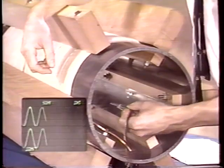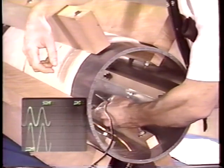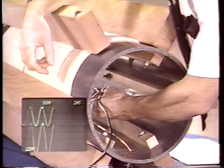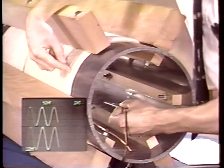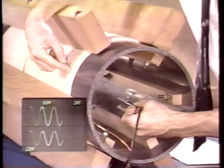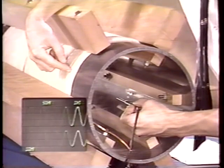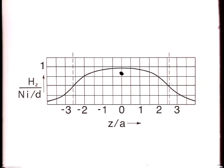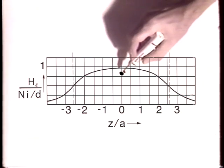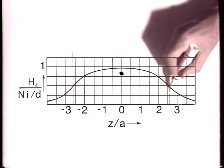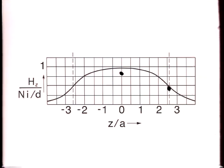Here's the on-axis magnetic field well inside the solenoid, about 2.3 Gauss. Here at the end of the coil, we measure about 1.2 Gauss, about half of the interior field. This is where our data points fall on the theoretical curve — here's the interior point, here's the point at the end of the coil. The accuracy with which theory and experiment agree is likely to be limited only by such matters as the uniformity of the winding, the care taken in mounting the probe, and the calibration of the Gauss meter.